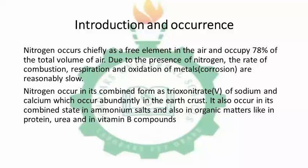Nitrogen occurs in its combined form as nitrates of sodium and calcium, which occur abundantly in the earth's crust. It also occurs in its combined states in ammonium salts and also in organic matter like proteins, urea and vitamin B compounds.